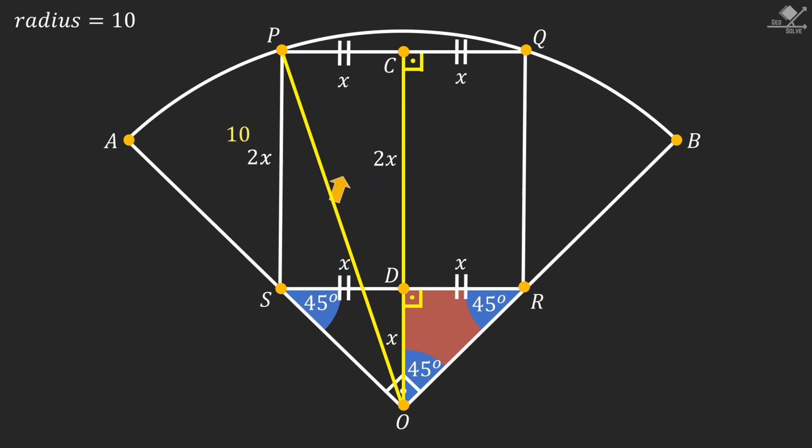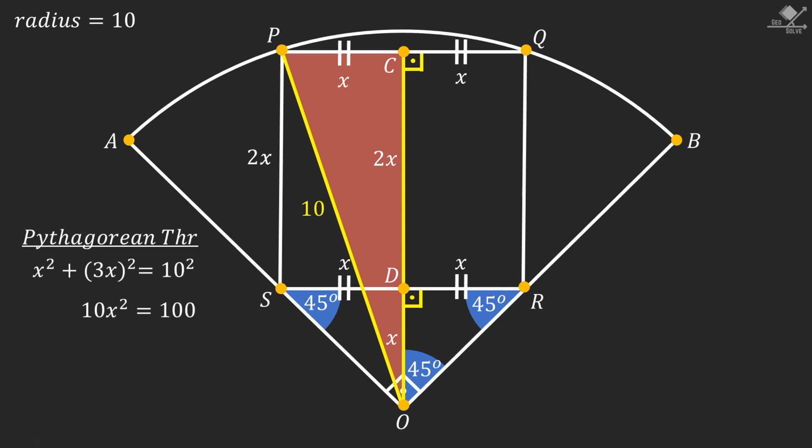Now let's draw this radius which is given as 10 units. Then focus on this right angled triangle. We can apply Pythagorean theorem on this triangle and find X equals root 10 units.